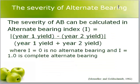The severity of alternate bearing can be calculated using the alternate bearing index formula, where I equals the absolute value of year one yield minus year two yield, divided by year one yield plus year two yield. I equals zero where there is no alternate bearing, and I equals one when there is complete alternate bearing. These values can be averaged over a number of years.